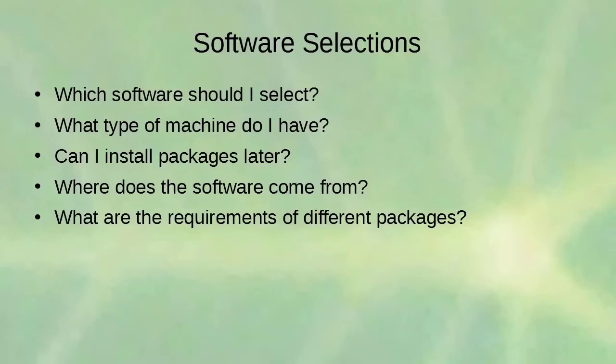You don't need to know all package requirements yourself. The repository tracks which software depends on which other software. When you install a package, it searches the dependency database, checks what's already on your system, downloads what's missing, installs the dependencies, and then installs your package. You don't need to worry too much about this process.